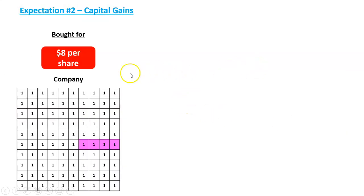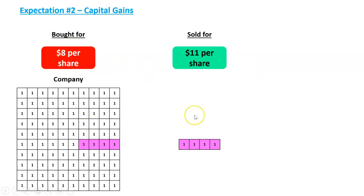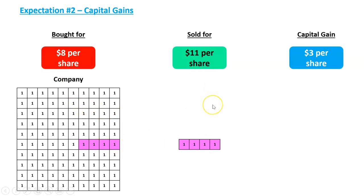Capital gains work a bit differently. You might go on the stock exchange and buy four shares in a business for $8 each. What you would like is for the value of those four shares to go up to, say, $11. You have then made what is called a capital gain — or simply a profit. That's a term you'll hear in the media, and in this case you've made $3 profit on each of your shares.